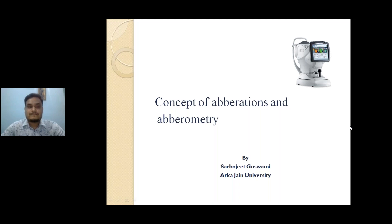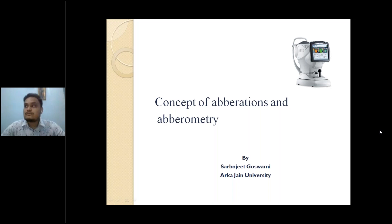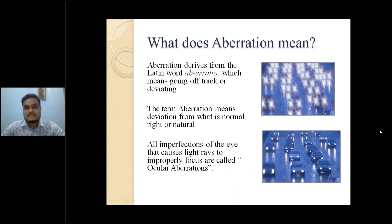Thank you so much. Good afternoon everyone. Today's online session is all about the concept of aberrations and aberrometry. As we know, if a point object does not focus on the retina as a point image, it will create optical aberration. In optometric practice, when refracting patients, we are only neutralizing two components of the refractive system — spherical and cylindrical — and not considering the whole refractive error. Aberration is derived from the Latin word 'aberratio,' meaning going off track or deviating from the ideal. The term aberration means deviation from what is normal, right, or natural.